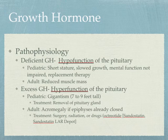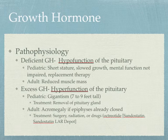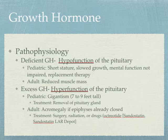In terms of growth hormone deficiency, this is usually related to hypofunction of the pituitary — the pituitary is not putting out enough stimulating factors for growth hormone. In the pediatric population, they'll have short stature, slowed growth, and it's important to note that mental function is not impaired — it's more related to physical growth. Treatment is usually done through replacement therapy. In adults, patients may notice reduced muscle mass or weakness.